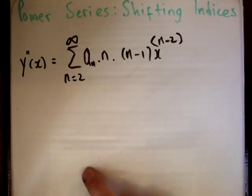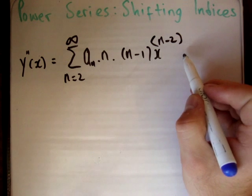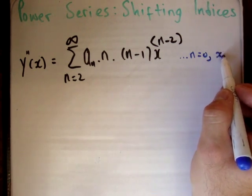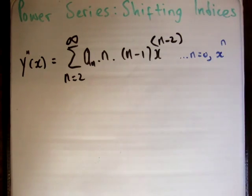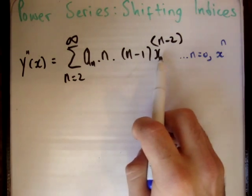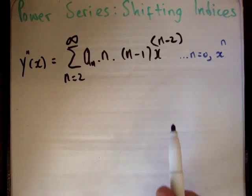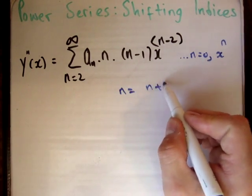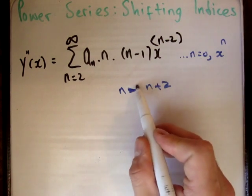And how do we do this is as follows. Well, if I want this to go to n is equal to 0 and x to the n, clearly in order to go from x to the n minus 2 to x to the n, I must say that n is equal to n plus 2. n becomes n plus 2.